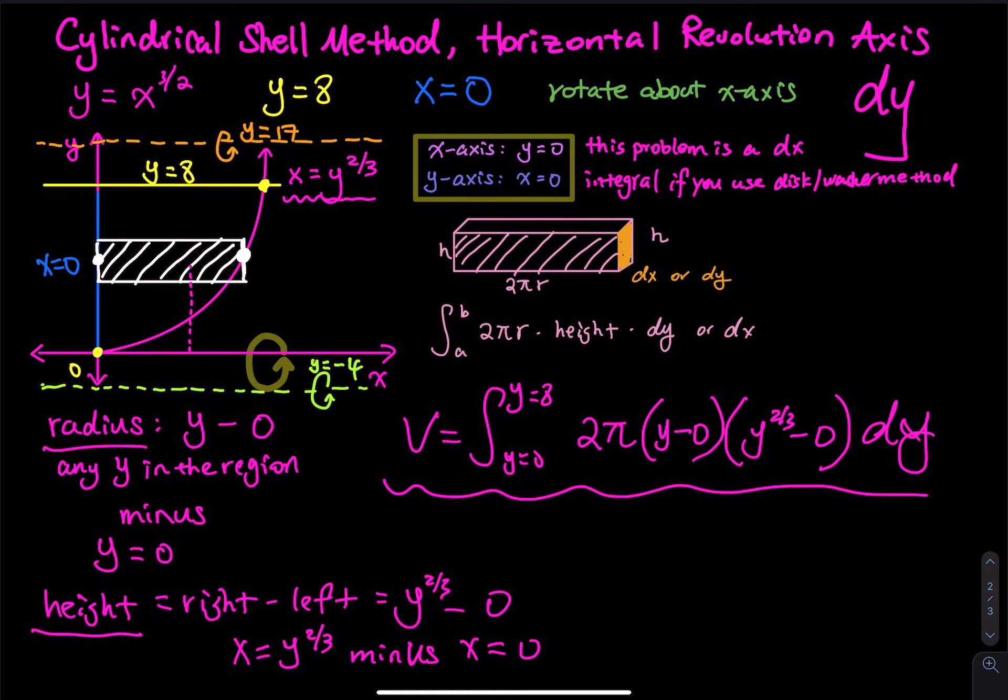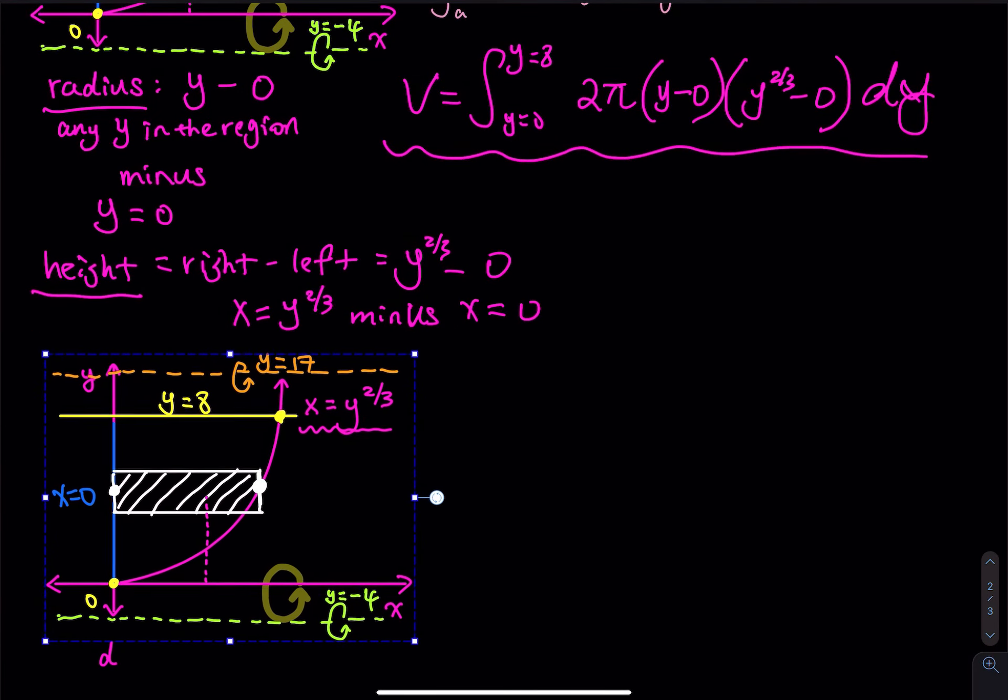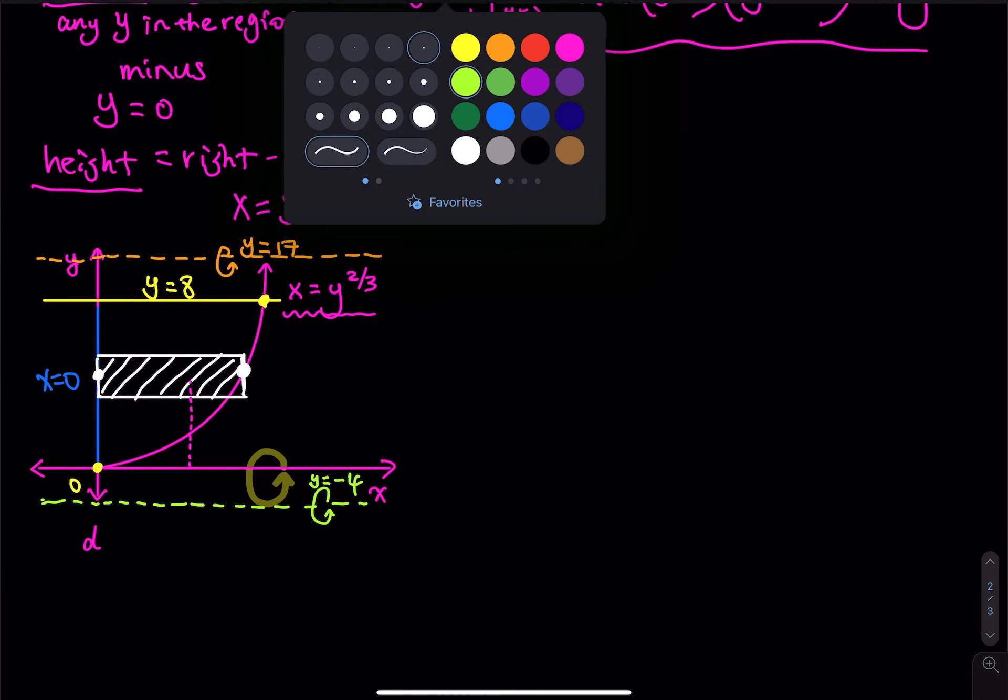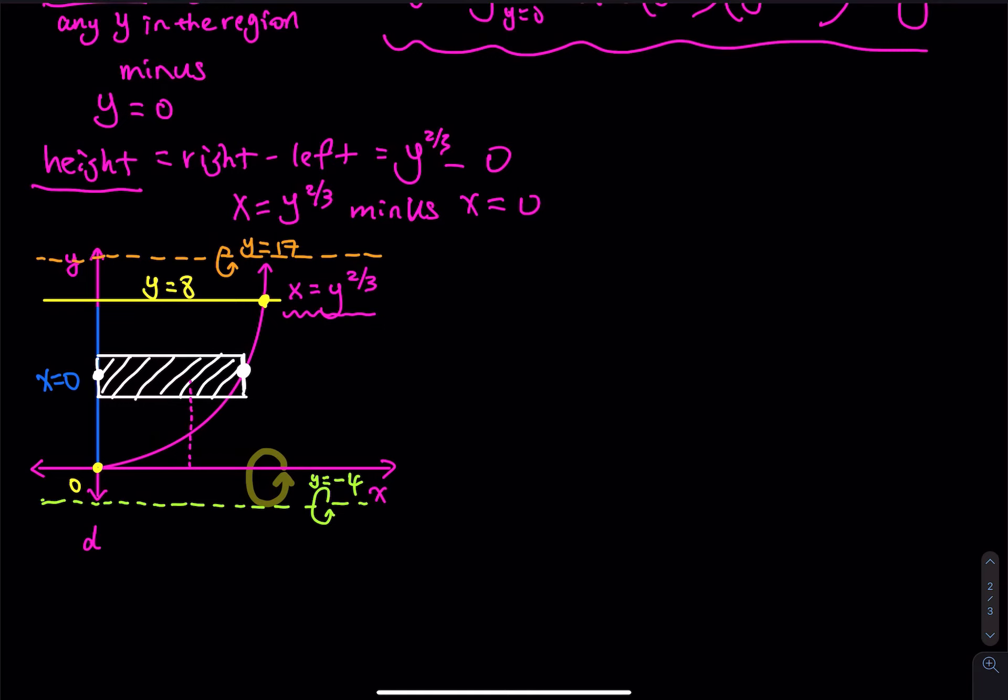So if I place the revolution axis on y equals 17 and one on y equals negative 4, how does that change the integral? That is what we have to find out in the next part. So let me copy and paste this picture. So let's take care of the orange line first. So we have y equals 17. Then what is the radius? Then the radius equals any y in the region subtract 17 or 17 subtract any y. So the radius is 17 subtract any y in the region, y equals 17 minus any y in the region. Because you have to use a bigger y minus the smaller y.